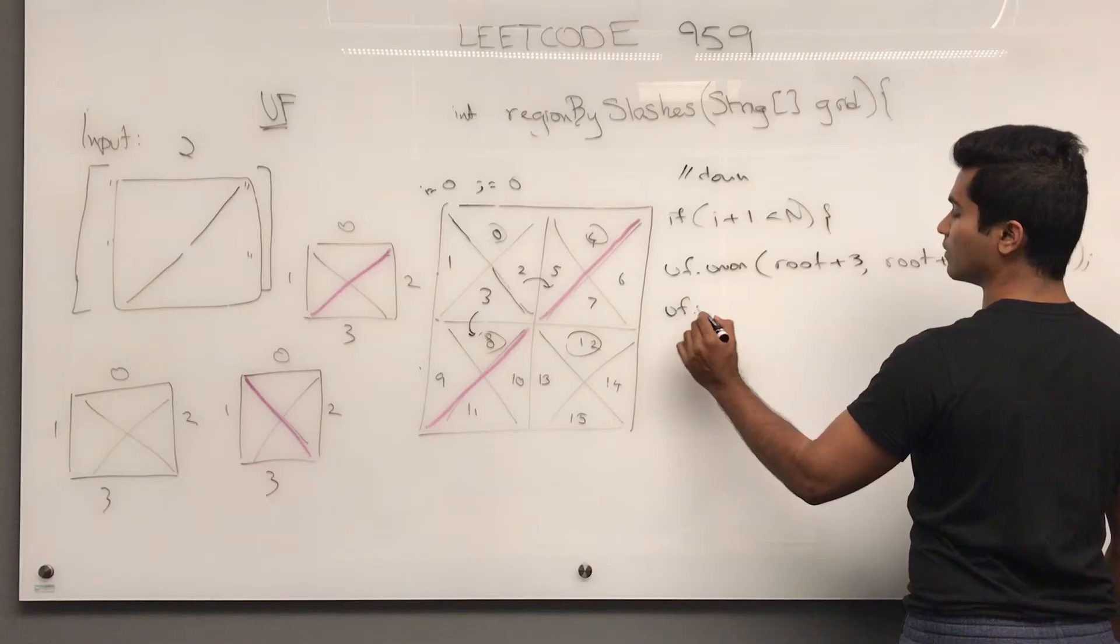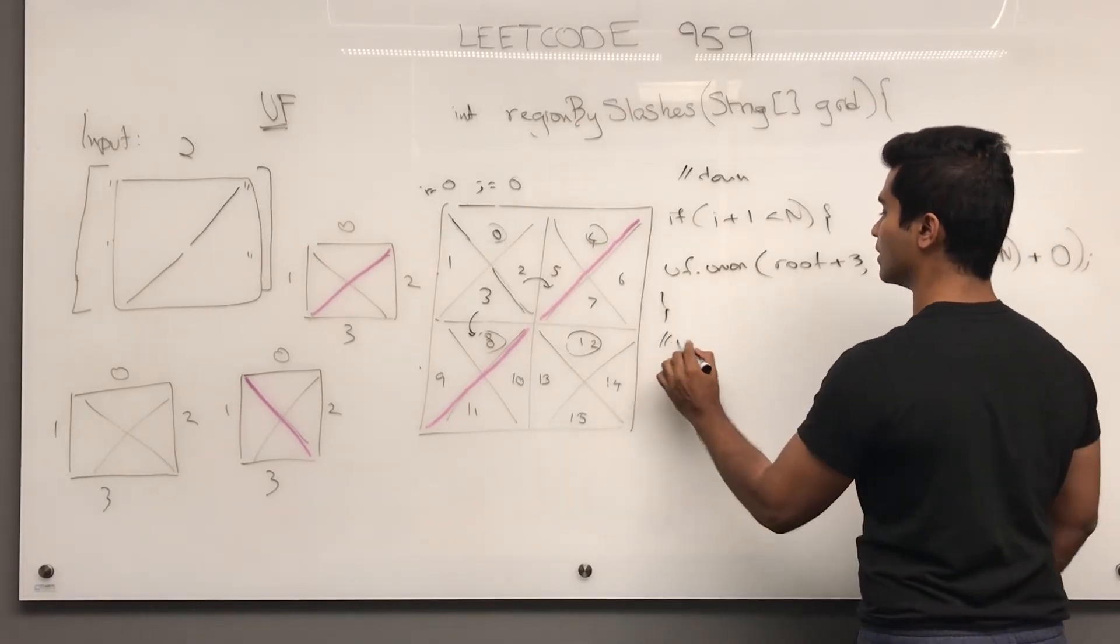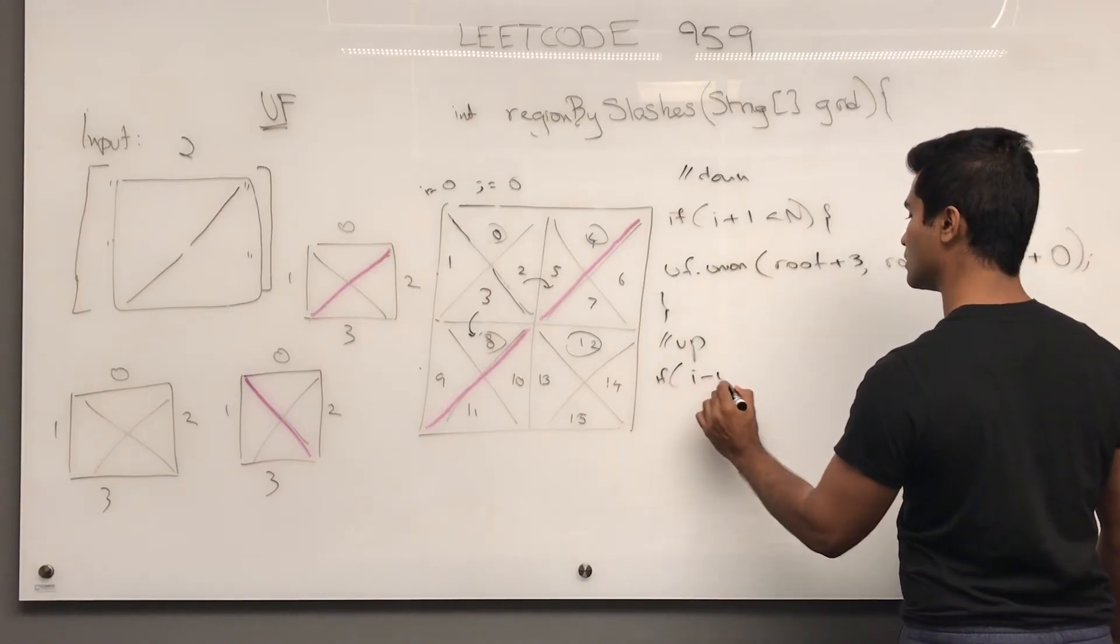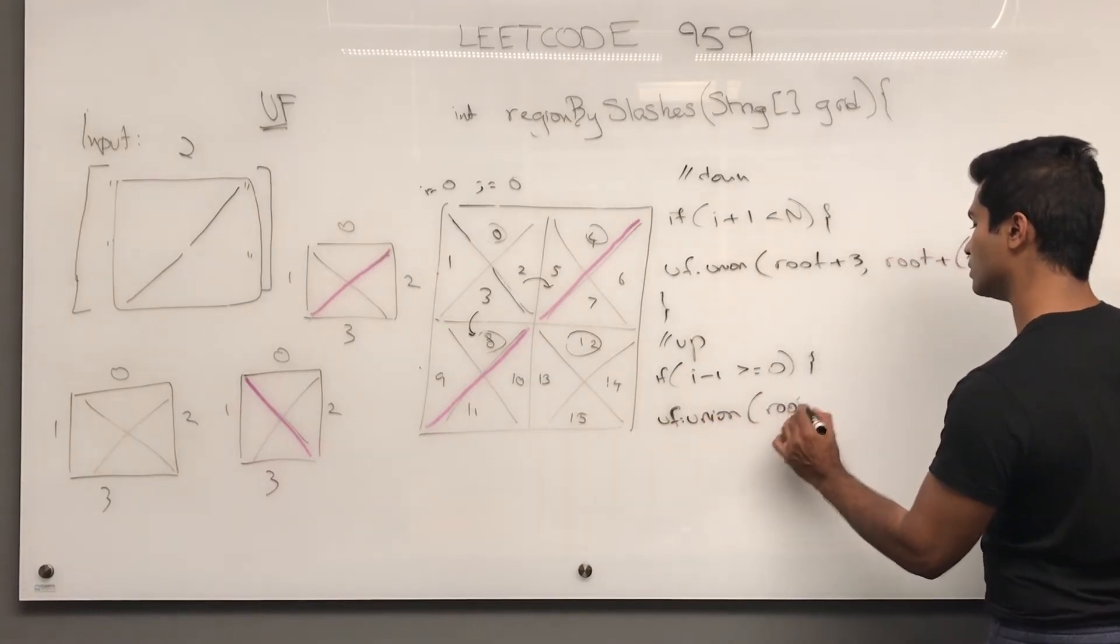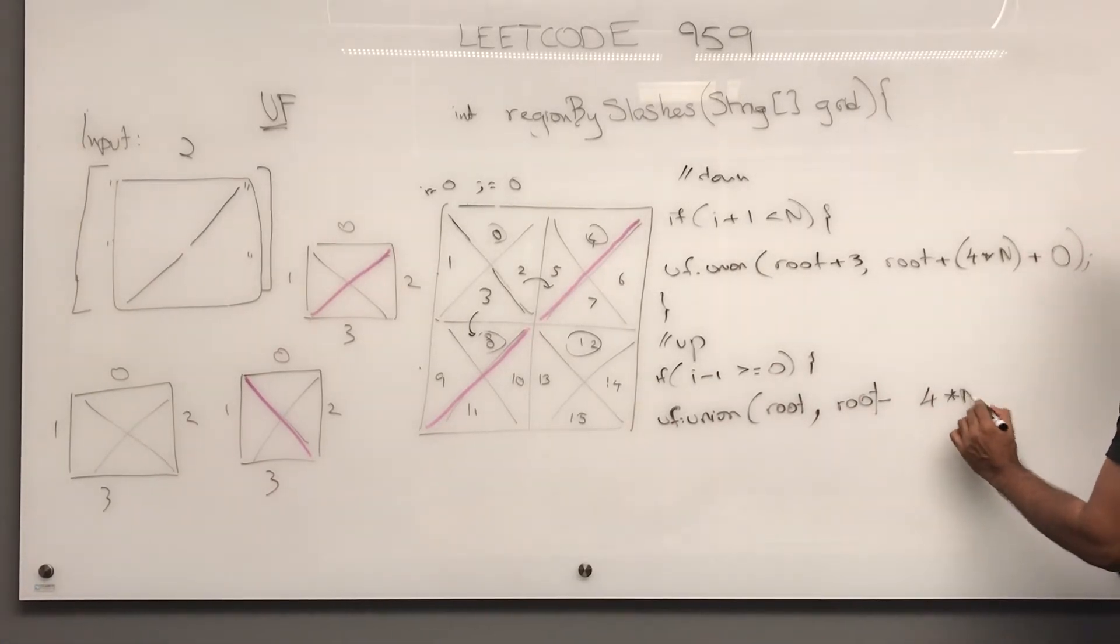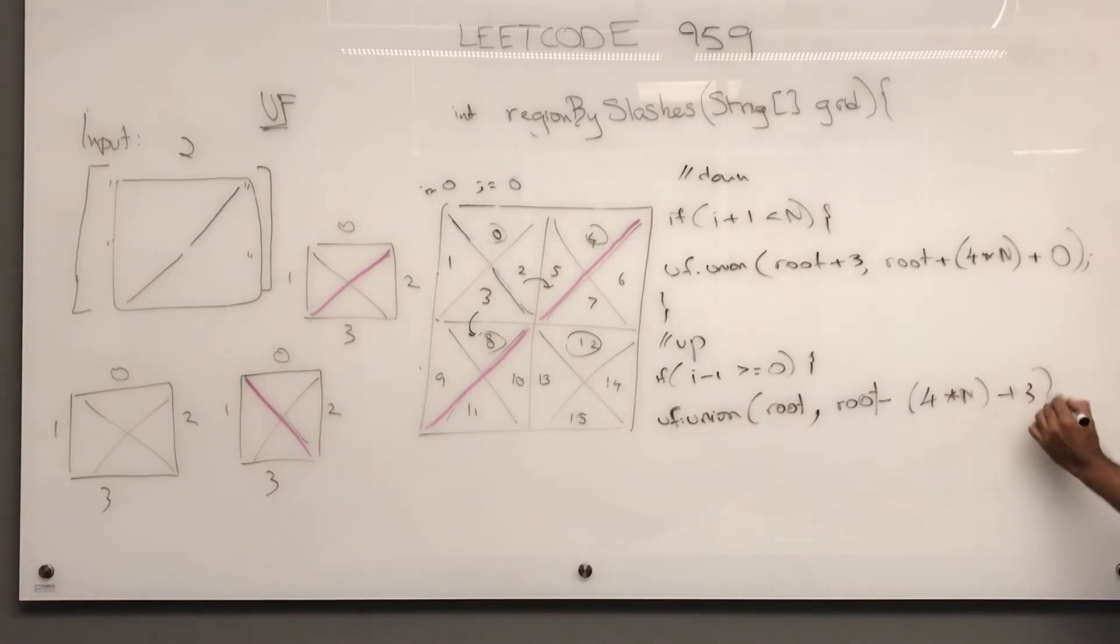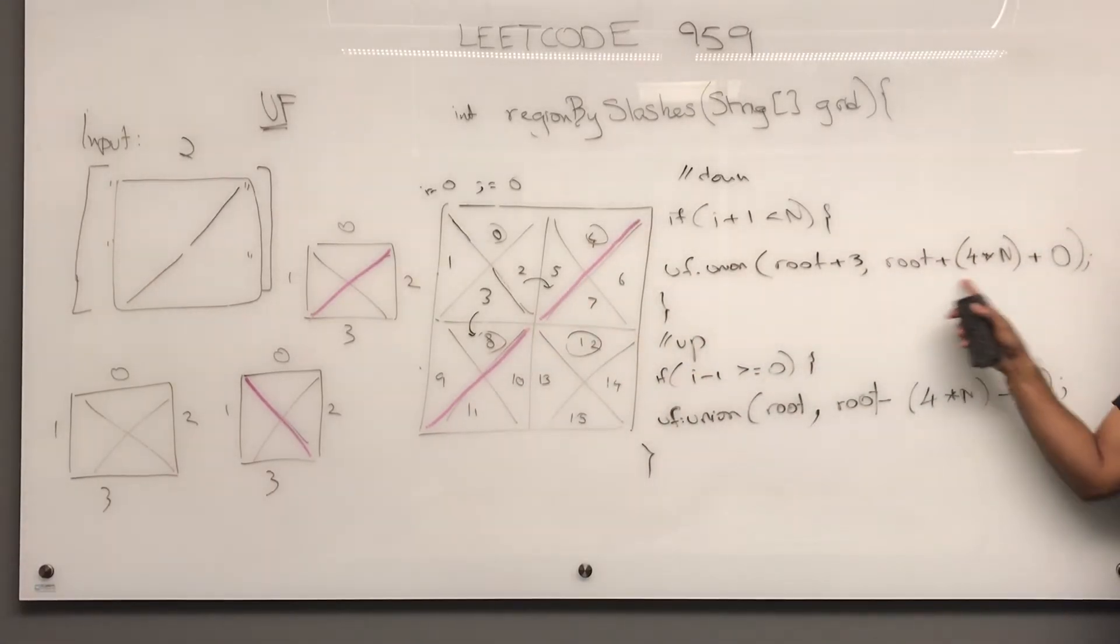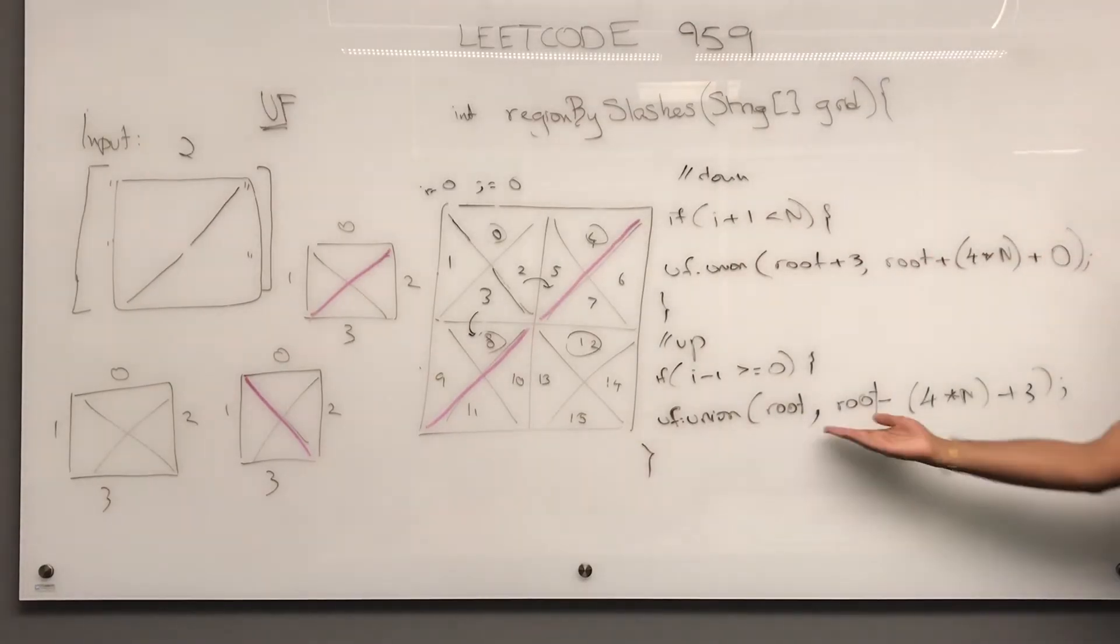And similarly, if there was something above, right, to go up, like say we were here and we wanted to combine 8 and 3, we would do if i minus 1 is greater than or equal to 0, uf dot union, root, comma, root minus 4 times n, right? So we would go from 8 to 0, and then we'd get to 3. So we have to do plus 3. So just take a look at it here. If we're here and we're trying to combine with the bottom below, we combine like this. And if we're here and we're trying to combine with the thing above, after we check our characters, then we go above like that.